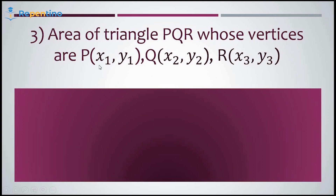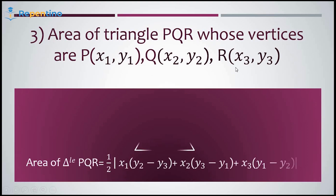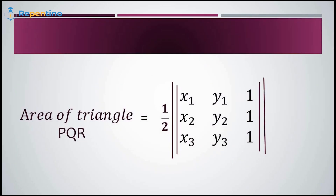Area of a triangle PQR whose vertices are P, Q, and R: the area equals half into the mod of (x1(y2 minus y3) + x2(y3 minus y1) + x3(y1 minus y2)). We keep the mod because area should not be a negative value. An easier way to remember this is: area equals half into mod of the determinant of [x1, x2, x3; y1, y2, y3; 1, 1, 1].